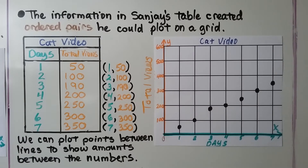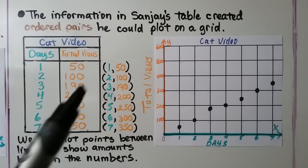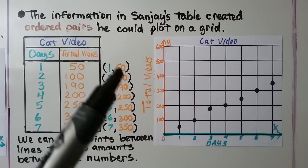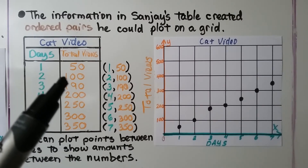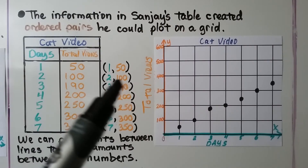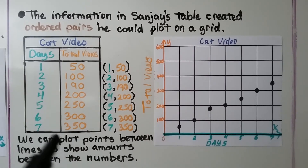The information in Sanjay's table created ordered pairs he could plot on a grid. For day one, he had 50 views — that's one for x and 50 for y. Day two had 100 views total, that's a two and a 100. He used the whole table to make ordered pairs.